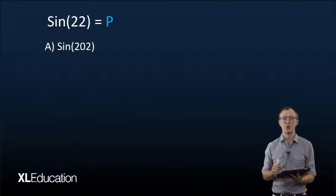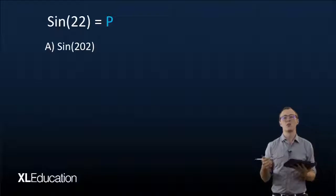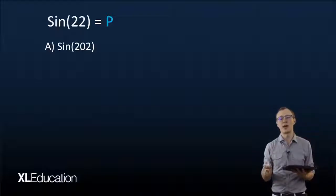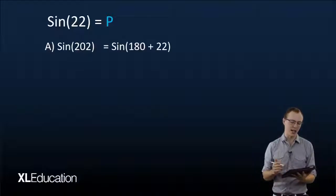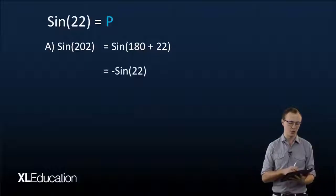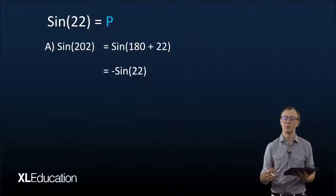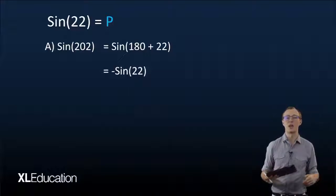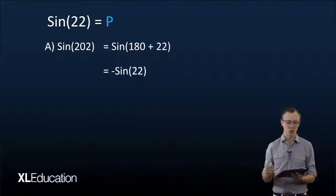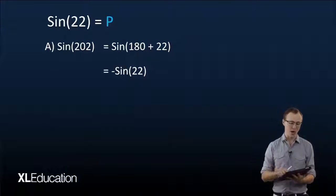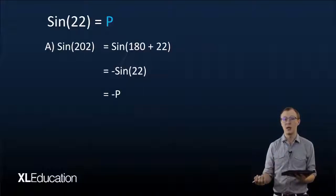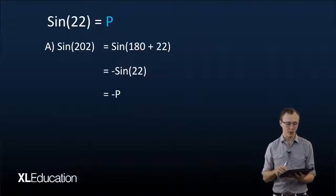For sine of 202°, we're comfortable working with first-quadrant angles between 0° and 90°, so let's convert it. We can split that into sine of (180° + 22°). We change that into negative sine of 22° because sine is negative in the third quadrant and positive in the first quadrant, so we put a negative sign in front. Since we know sine(22°) equals P, we substitute in P.